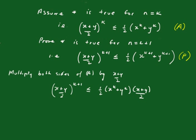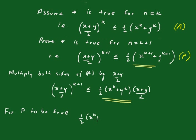Now, for P(k+1) to be true, the right-hand side here must be less than or equal to one half of x to the k plus 1 plus y to the k plus 1. So for P to be true, one half times (x to the k plus y to the k) times (x plus y)/2 must be less than or equal to one half of x to the k plus 1 plus y to the k plus 1.